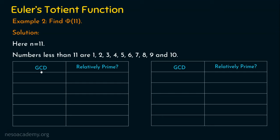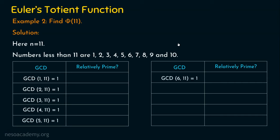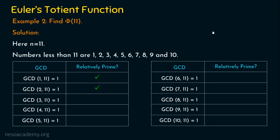We are going to compute the GCD of each number with 11 — from GCD of 1 and 11 up to GCD of 10 and 11. In all cases, the GCD is 1, because 11 is a prime number. So 1, 2, 3, 4, 5, 6, 7, 8, 9, and 10 are all relatively prime to 11.